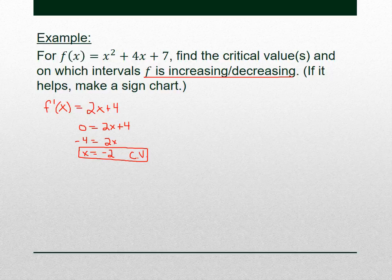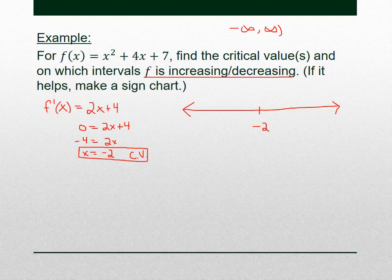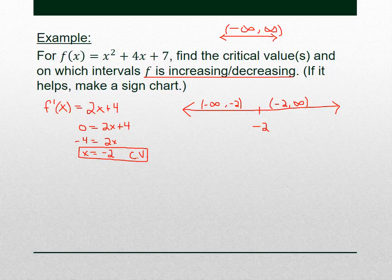Now we use this critical value to determine where the function is increasing or decreasing. We draw a number line and break it into pieces using x = −2. This gives us two intervals: (−∞, −2) and (−2, ∞). Labeling those intervals first is helpful, since our answers for where the function is increasing or decreasing should be expressed as these intervals.